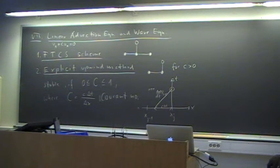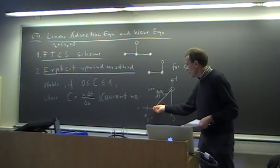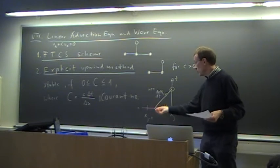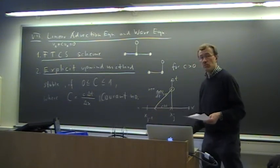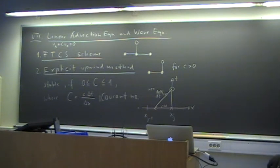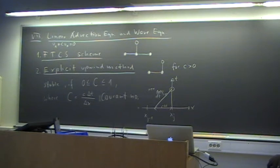If we satisfy the CFL condition, we can find this foot point and interpolate it by the values at the surrounding grid points — it's just a linear interpolation. That is then the explicit upwind method. The nice thing with this scheme is that it is exact for Courant number equal to one. So the scheme gets more and more accurate and even exact as you approach one. If you choose Courant number equal to one, it is exact.